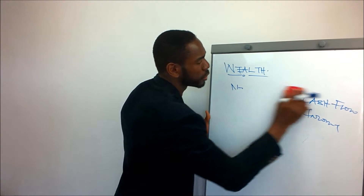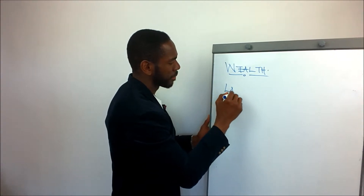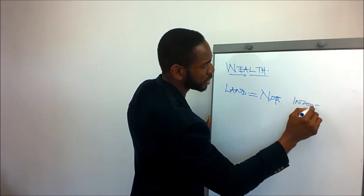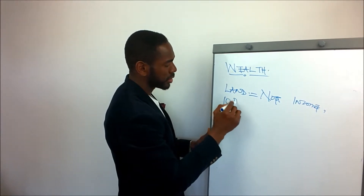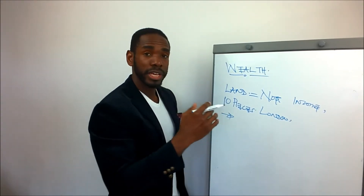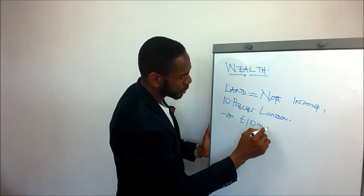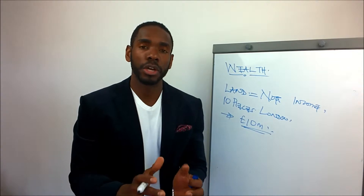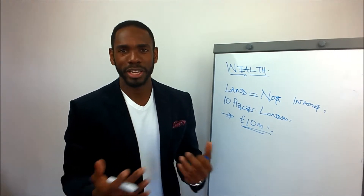I'll give you a good example. Let's assume you live in London and you have real estate, but your real estate is land that does not pay you an income. Let's assume you have about ten pieces in various parts of London and the total combined net worth is about ten million pounds. Your net worth, assuming nothing is owed, is ten million. That's quite easy to understand.